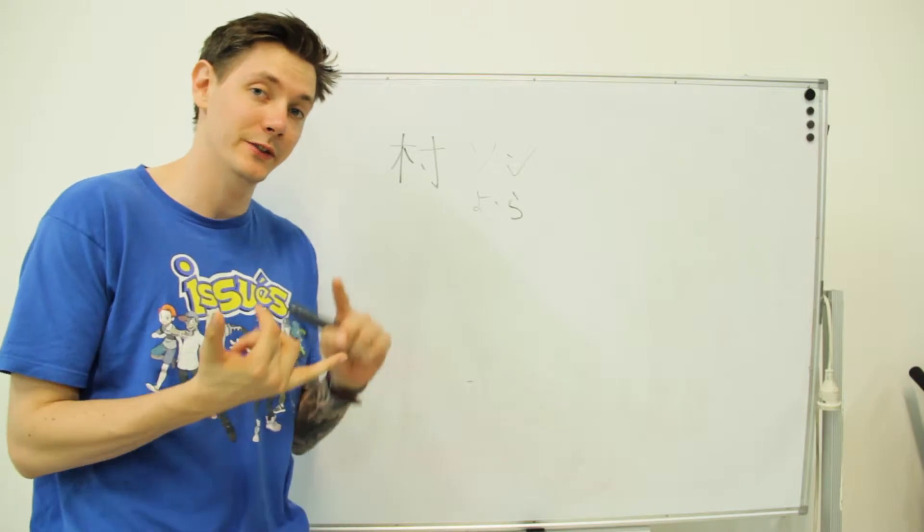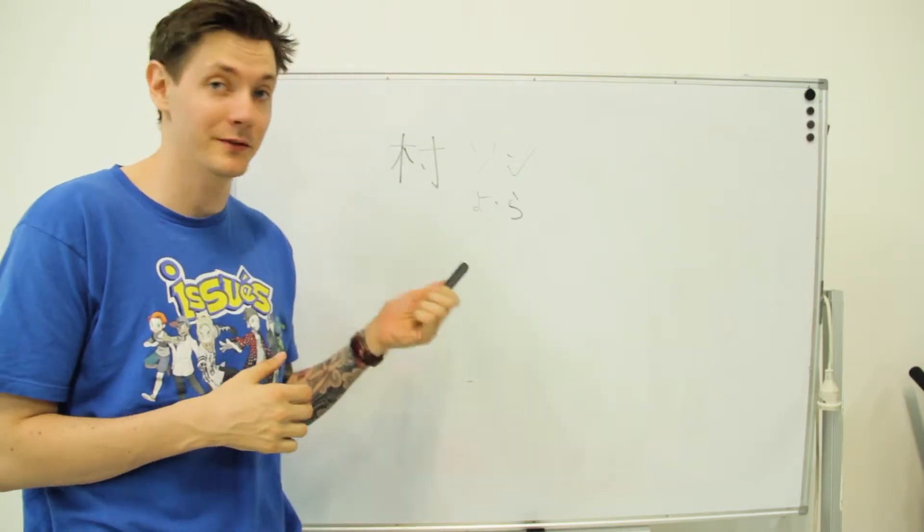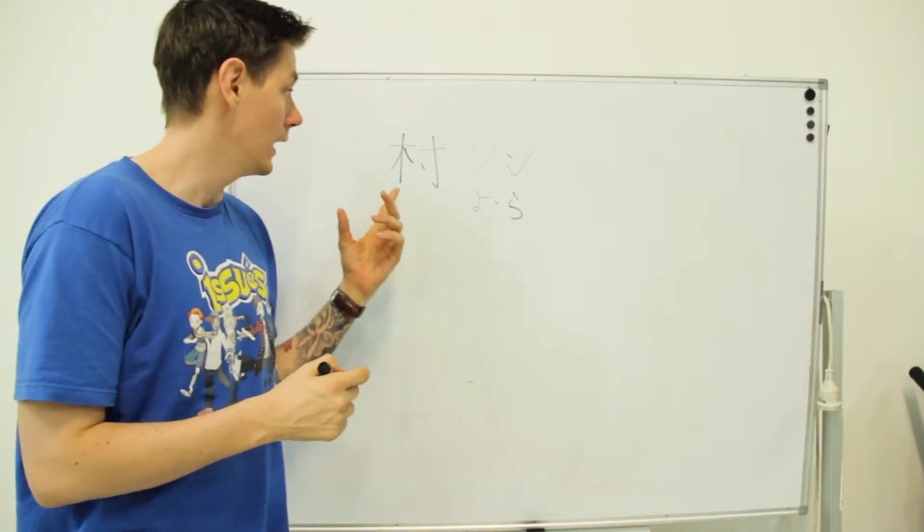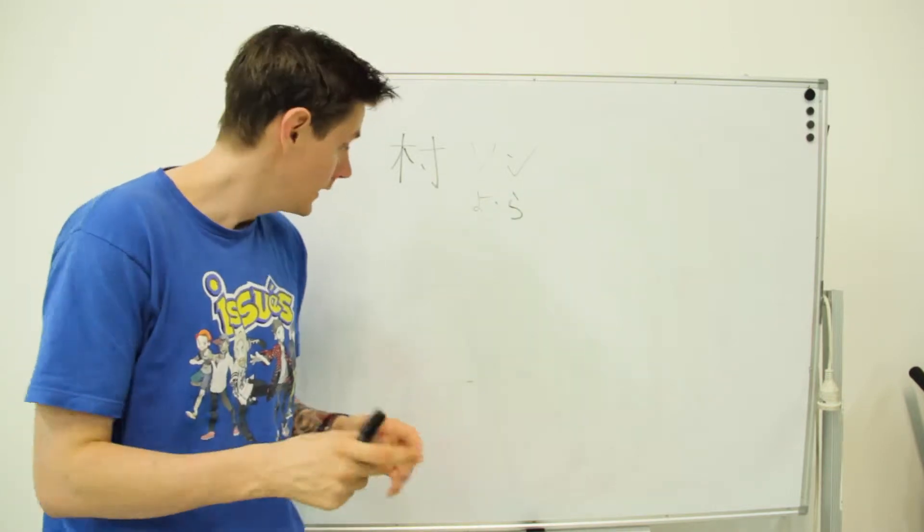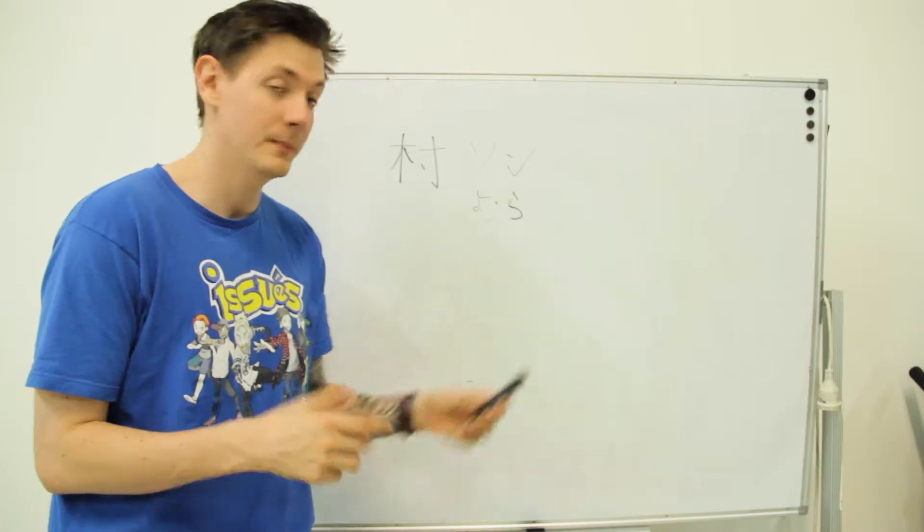You already know how to write the kanji for city and the kanji for town. Let's have a look at the kanji for village. The onyomi reading is sun like sun kai meaning like village meeting and the kunyomi reading is mura meaning village, mura.